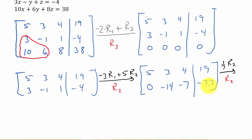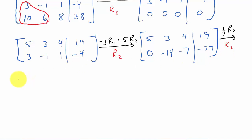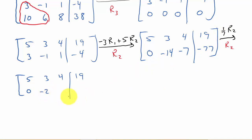Dividing each element by 7 doesn't change the answer — it just makes the numbers smaller. So row 1 stays: 5, 3, 4, 19. And the new row 2 becomes: 0, negative 2, negative 1, negative 11.